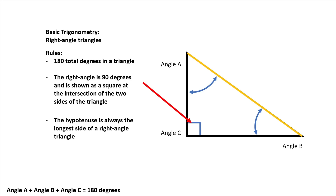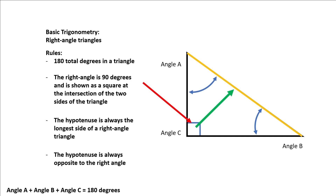A third rule is that the hypotenuse is always the longest side of a right angle triangle. It is identified here in this example as that yellow line. We will always know where the hypotenuse is because it is always the longest side and it is always directly opposite to the right angle.